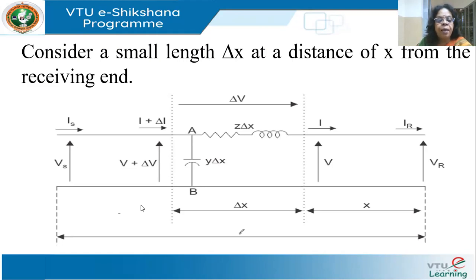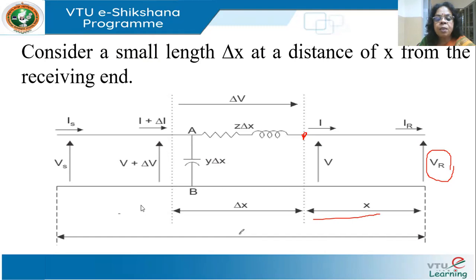I draw your attention to this figure. Here I have the receiving end, and I am considering a point at a distance of X from the receiving end. The voltage at this point is V and the current is I. I take a small portion of the line called delta X.